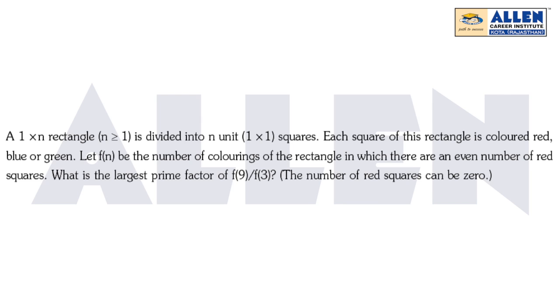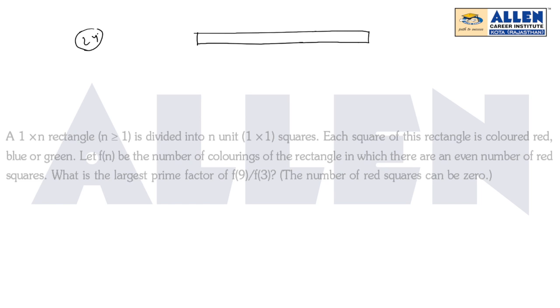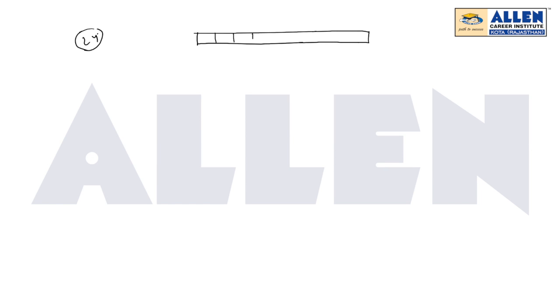Hello friends, we will start with question number 24. We are given a rectangle that is divided into 1×1 square sizes, so there are n such squares. fn is the number of ways we can color these squares so that there are an even number of squares with red color.